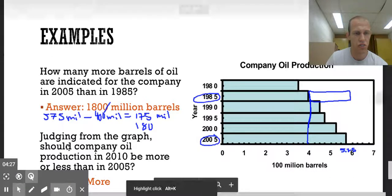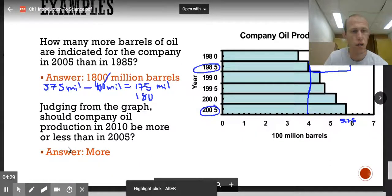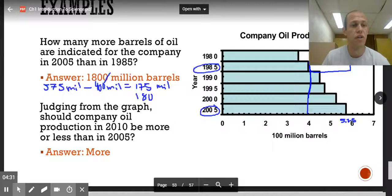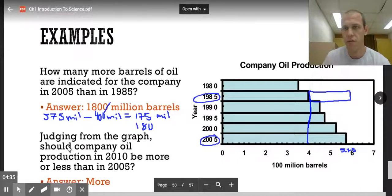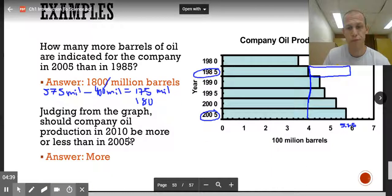Next question, judging from the graph, should company oil production in 2010 be more or less than in 2005? So if we just look at trends, it looks like the oil production is going up, so we would answer more.